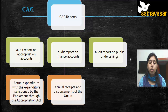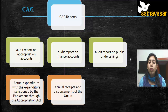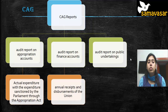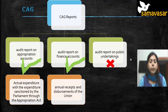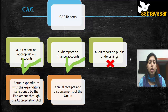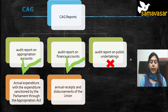The audit report on finance accounts covers the annual receipts and disbursements of the union — so all the receipts and disbursements overall. The third CAG report is the audit report on public undertakings. As far as the Public Accounts Committee is concerned, it examines the first two reports — on appropriation accounts and finance accounts — but not the audit report on public undertakings.